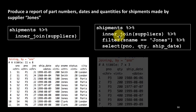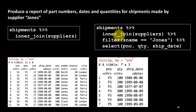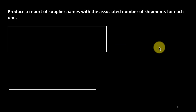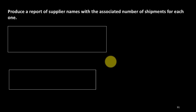So we say shipments inner join suppliers, then filter where supplier name is Jones, then select the required columns: part number, quantity, and ship date. Notice that we are using all our earlier understanding of dplyr to get exactly what we want. We've been saying inner join so far — later on we'll see why exactly we say inner join. For now the only kind of join we know is inner join: we take matching values from the two tables and append the details.